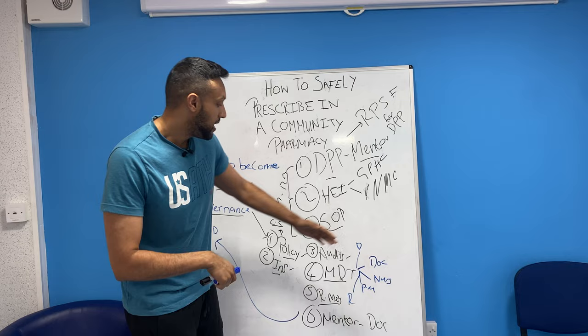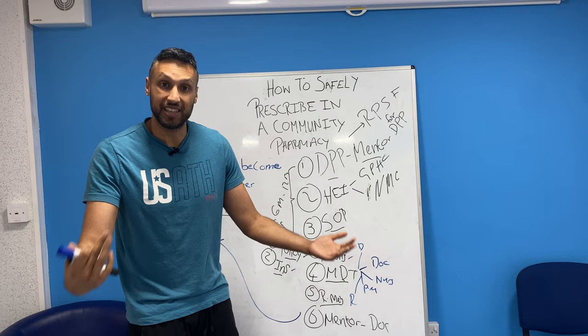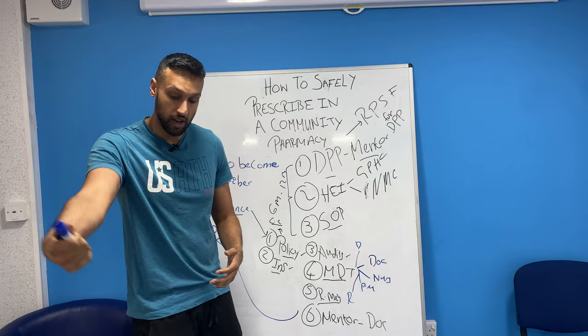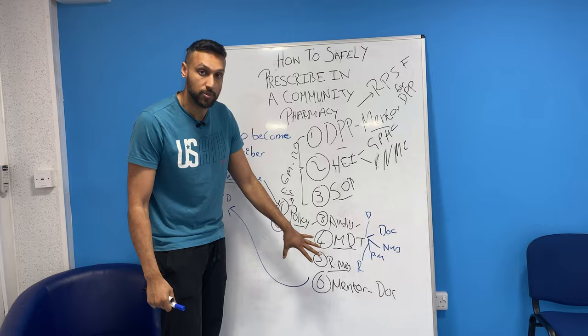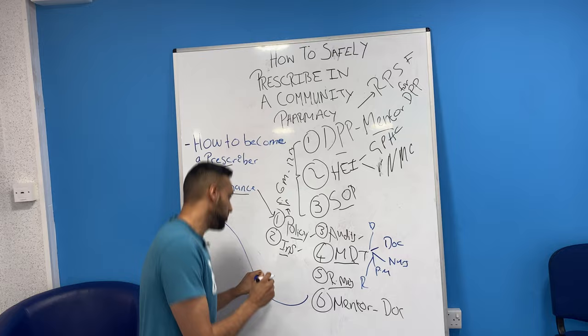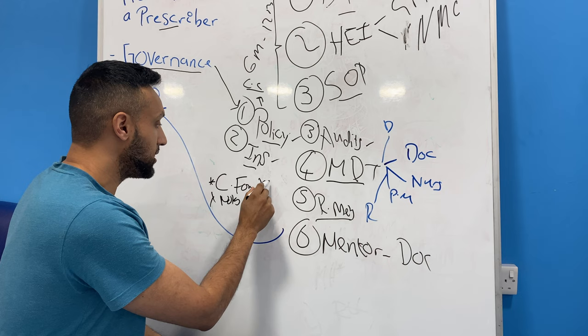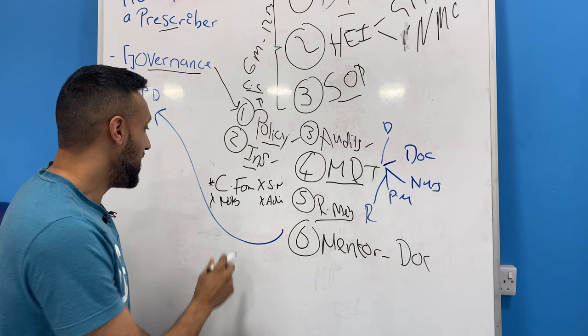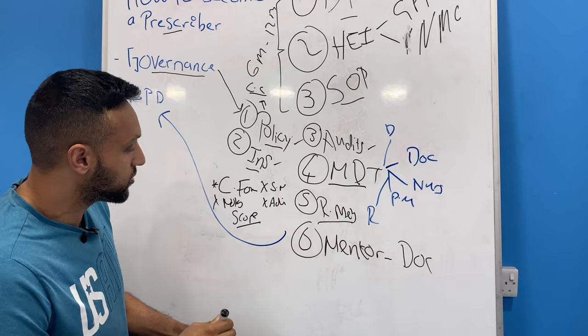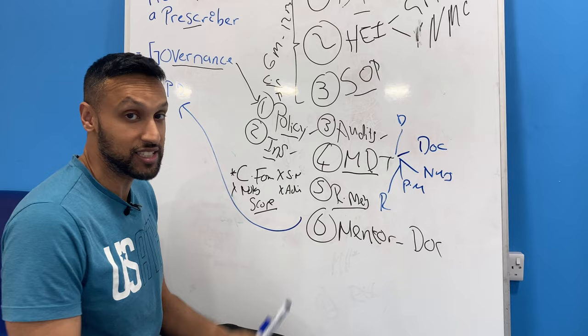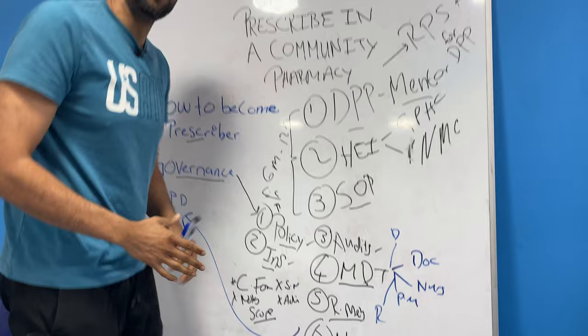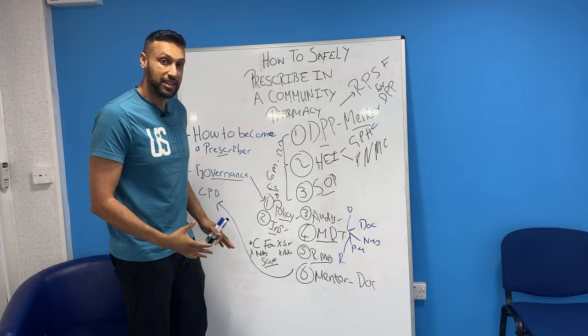Ensure audits are in place so your work is best practice and evidence-based. Be part of a multidisciplinary team — another pharmacy prescriber, a nurse, or a doctor available as needed. Have regular meetings with your mentor to discuss cases. When prescribing, make sure you have consent forms, thorough notes, and that you're safety netting patients and giving appropriate advice. Always prescribe within your scope — if you qualified in hypertension, don't suddenly start prescribing for asthma.